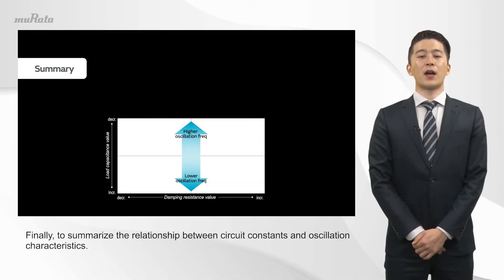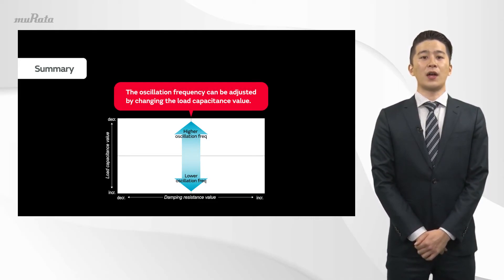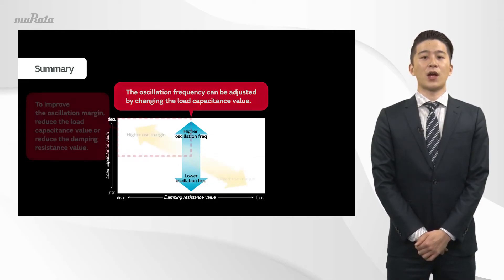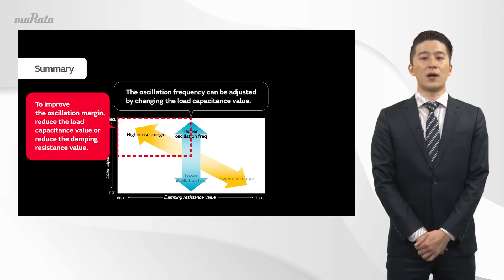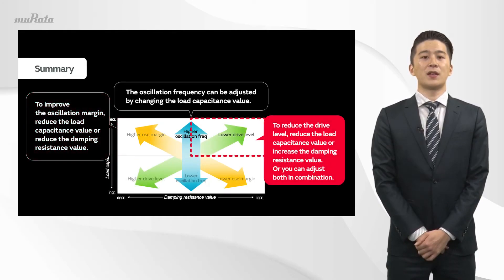Finally, to summarize the relationship between circuit constants and oscillation characteristics: the oscillation frequency can be adjusted by changing the load capacitance value. To improve the oscillation margin, reduce the load capacitance value or reduce the damping resistance value — or adjust both in combination. To reduce the drive level, reduce the load capacitance value or increase the damping resistance value — or adjust both in combination.